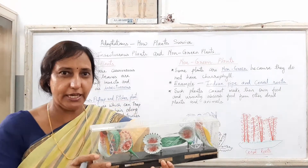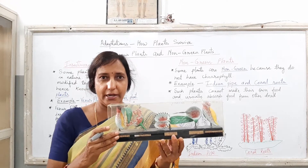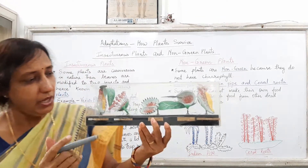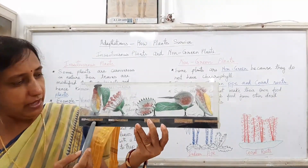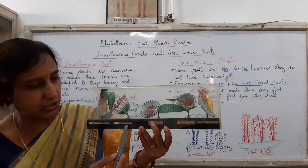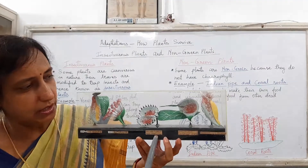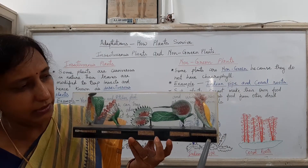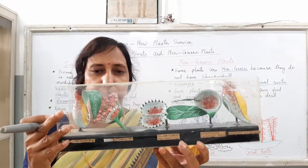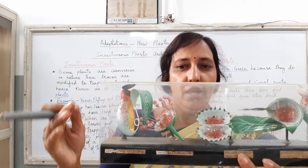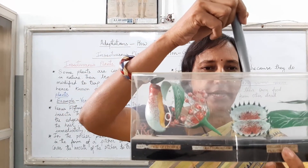So children, here I am holding a model in my hand for you, to give an idea about the pitcher plant and the Venus plant. Children, here you can see the pitcher plant — have a look at this. In the second picture, there is another plant, and here you can see the Venus flytrap plant. And in the next picture, you can see the pitcher plant. Just have a close look at these plants — the model of the plants, actually.